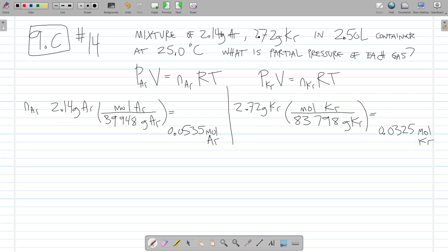All right, so we've converted the mass of each gas into the moles of each gas using the molar mass from the periodic table. If these were not atoms, then we just add up the atoms that are in the chemical formula to find the molar mass. And we do the same thing.